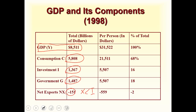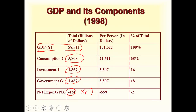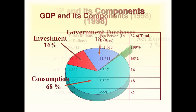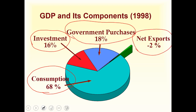Consumption is always the biggest part of GDP. This is shown in the pie chart here, which represents the same figures from the previous slide. Consumption was 68% of GDP, investment was 16%, government purchases were 18%, and net exports were negative 2%. This is for the United States in 1998.